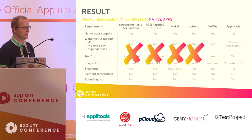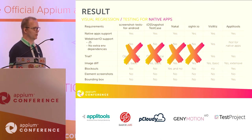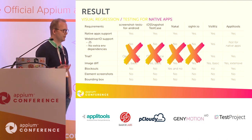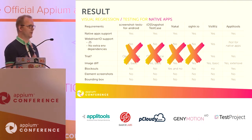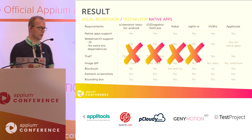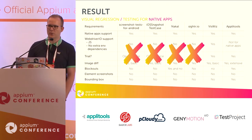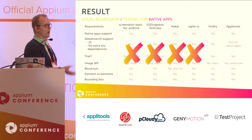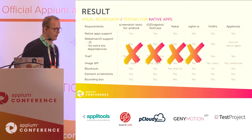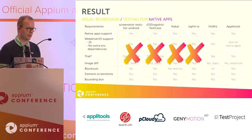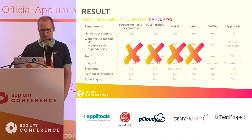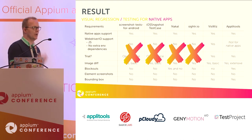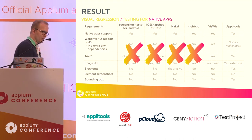We also wanted the tool to be actively maintained, so that if we found an issue with an open source tool, we could add a PR and hopefully get it fixed quickly. Nakal was end of life — not maintained anymore. So in the end we had FizzWiz and AppliTools. FizzWiz drew our attention because it supported WebDriver.io, but in the end it did not support blockouts. So in the end we had AppliTools.